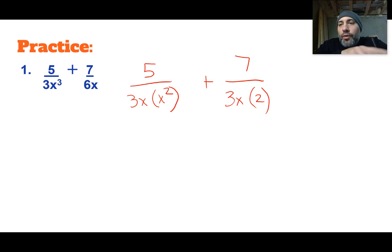So the question you have to ask yourself is what does each, do we need to add or multiply each of the denominators by to get the denominators to be the same? So if you look at it, they both have a 3x in common. Now one of them is missing an x², the other one's missing a 2. So we have to multiply that in to each of the missing denominators.